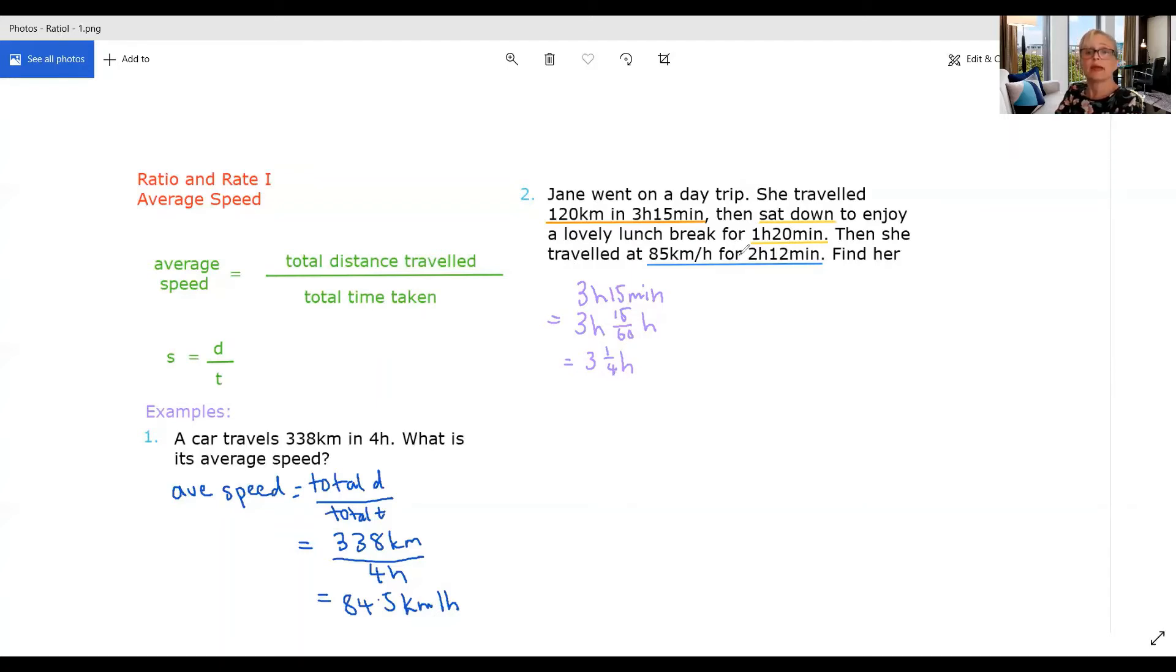The next amount of time is 1 hour and 20 minutes. So that's 1 hour and 20/60ths of an hour, which is one and one third hours.